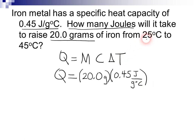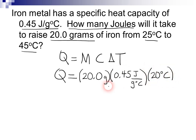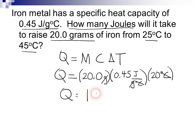It says it's going from 25 degrees to 45 degrees. What is that delta T? Hopefully you see that that's a rise of 20 degrees, so our change in temperature is 20 degrees Celsius. Our grams cancel and our degrees Celsius cancel, so our answer is going to be in joules. When you multiply 20.0 times 0.45 times 20, you get that there's a transfer of 180 joules of heat. That's the answer to that problem.